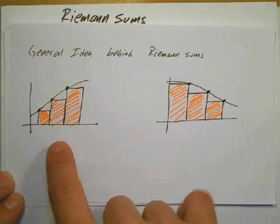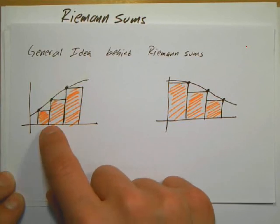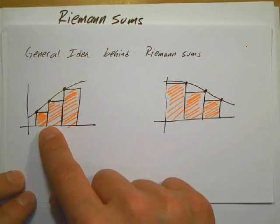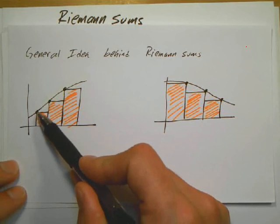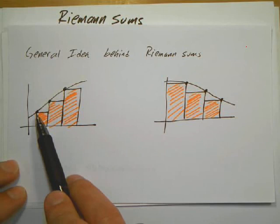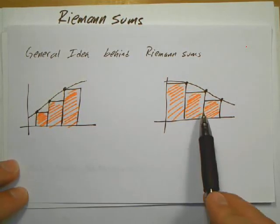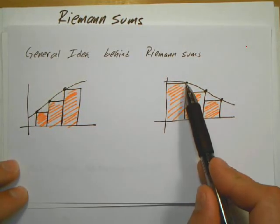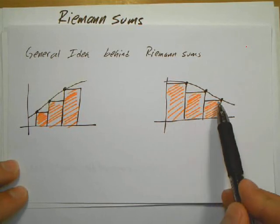In these two cases, we're having rectangles that are inside. More specifically, this would be called a left Riemann's Sum because each rectangle is touching the curve on the left — so the height of the rectangle is based on the value on the left. In the example on the right, the rectangle is touching the curve on the right, so it's going to be called a right Riemann's Sum.